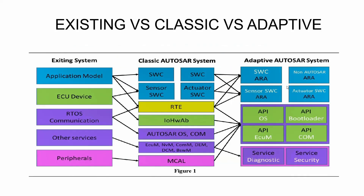Now let's see the difference between the existing model, the Classic Platform, and the Adaptive Platform. In the existing system we have an application model, ECU device, RTOS, communication, other services, and peripherals. In Classic AutoSAR, the application layer uses Software Components (SWCs), the RTE handles communication between application SWCs and the base software, and OS, COM, and other services are in the base software. In Adaptive AutoSAR, the same structure is realized with ARA — we have software components, sensor software components, and actuator software components, plus services and APIs on the base software side. This is how the existing model is distributed into Classic or Adaptive AutoSAR platforms.